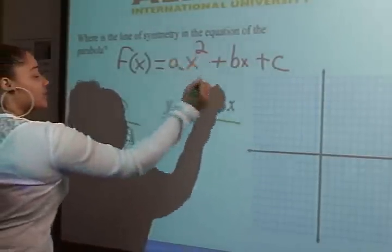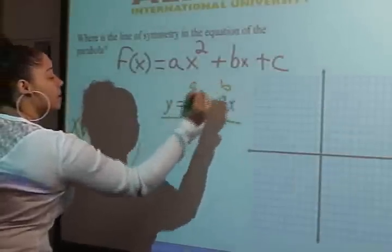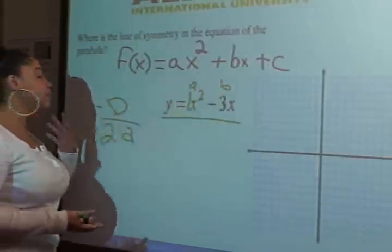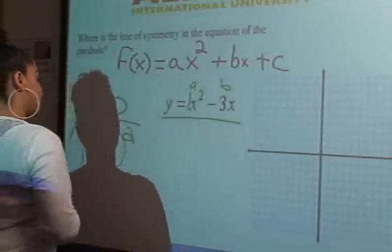So this is our a, this is our b. You know that there's a 1 because it's a single variable and 1's always in front of it when it doesn't have a number there.